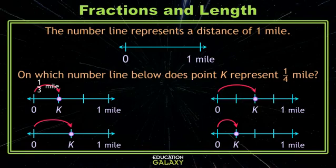In this next number line, the space between 0 and 1 mile is split into four equal parts. Our point K is at the second tick mark, which means it represents 2 fourths mile.